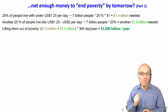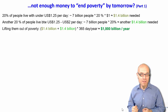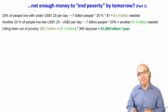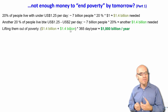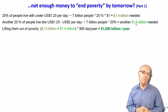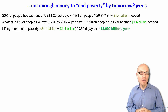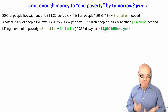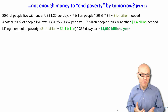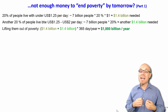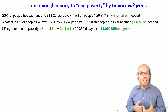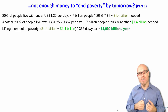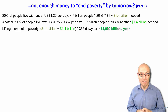So we would need $1.4 billion to lift people out of extreme poverty, and another $1.4 billion to lift those in poverty over the poverty line. In total, we would need $1.4 billion plus $1.4 billion times 365 days in a year — roughly around $1,000 billion, a trillion dollars.